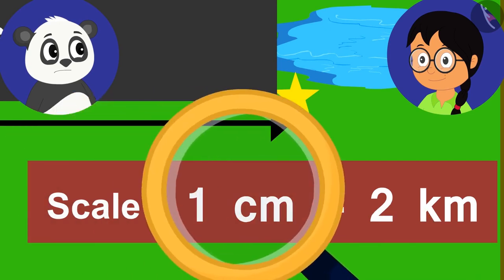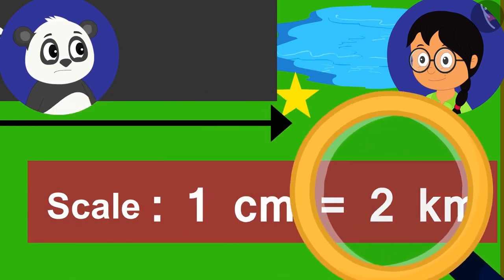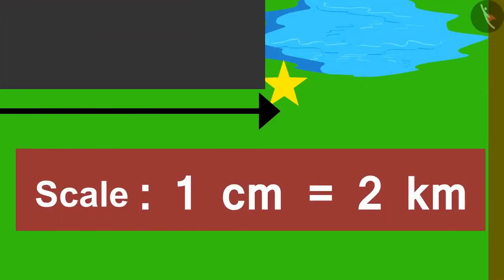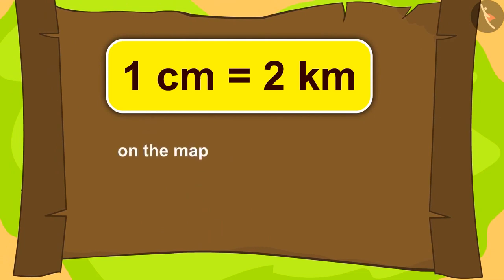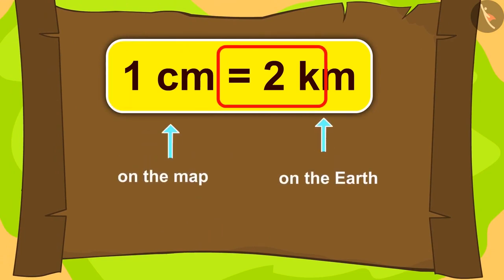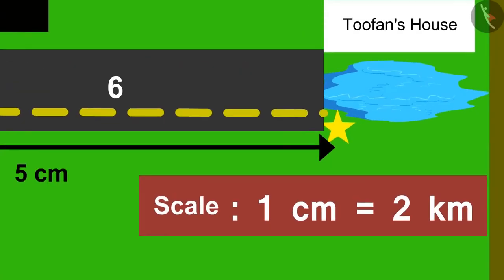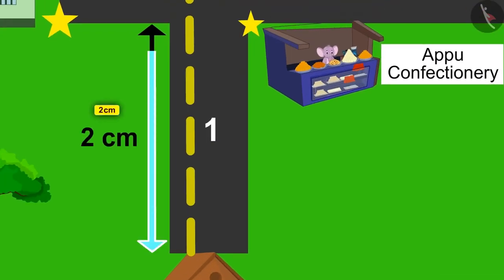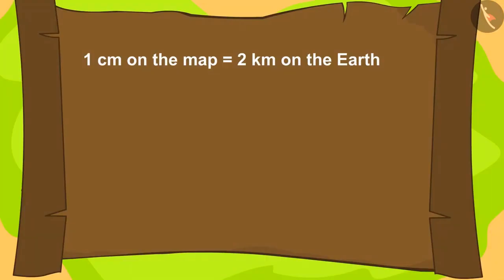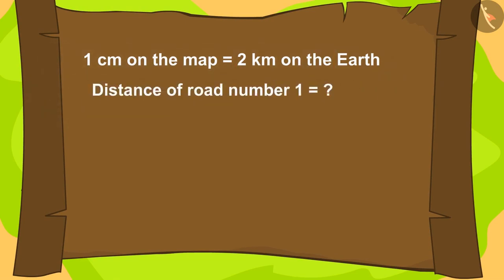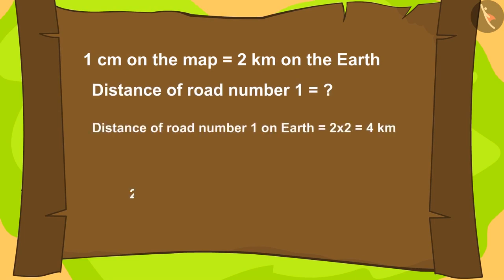As written on this map, 1 cm equals 2 km. This means that 1 cm on the map is equal to 2 km on the earth. The distance of road number 1 on the map given by uncle is 2 cm. How many km is 1 cm according to the scale? 2 km. So the distance of road number 1 is 2 times 2, which equals 4 km.